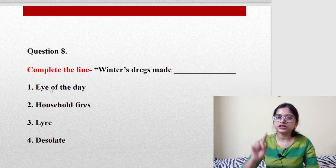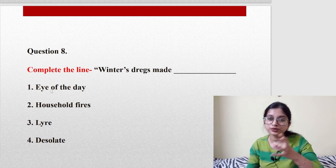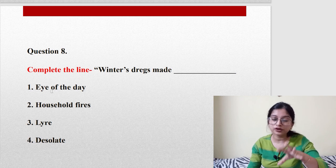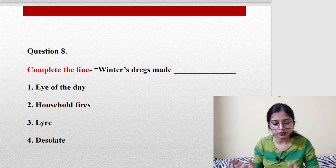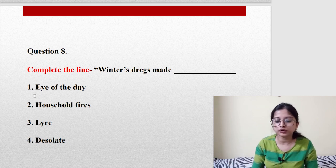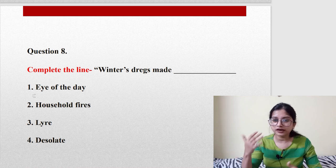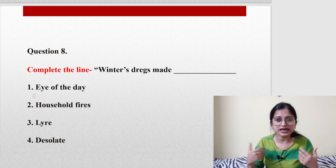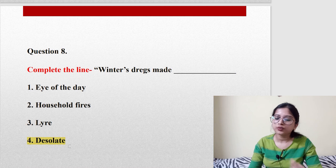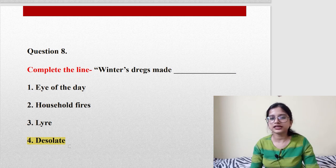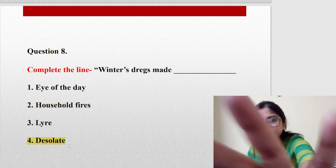Question number eight: Complete the line. Remember you can be asked to complete the line, so you must be aware of the poem's lines. 'Winter's dregs made ___'—options are 'are you,' 'of the day,' 'liar,' and 'desolate.' Among these, the answer is 'winter's dregs made desolate.' I won't tell you to mug up, just read it four to eight times so you get an idea of the lines.